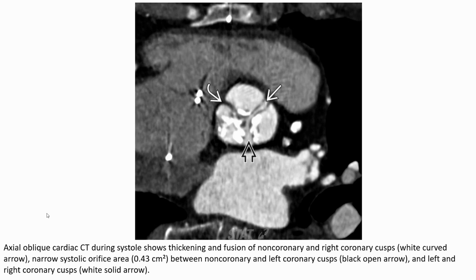This axial oblique image shows thickening and fusion of the non-coronary and right coronary cusp, with a narrow systolic orifice area of approximately 0.46 cm² between the non-coronary and left coronary cusp, and between the left and right coronary cusp.